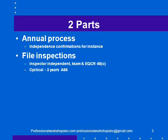There are two parts to the annual process. There's the annual process — the stuff you do each year, things like independence confirmations, for instance. And the second part is file inspections. Occasionally people think that the monitoring process is only about file inspections, but there's a list of other things that you have to do annually, including independence confirmations.